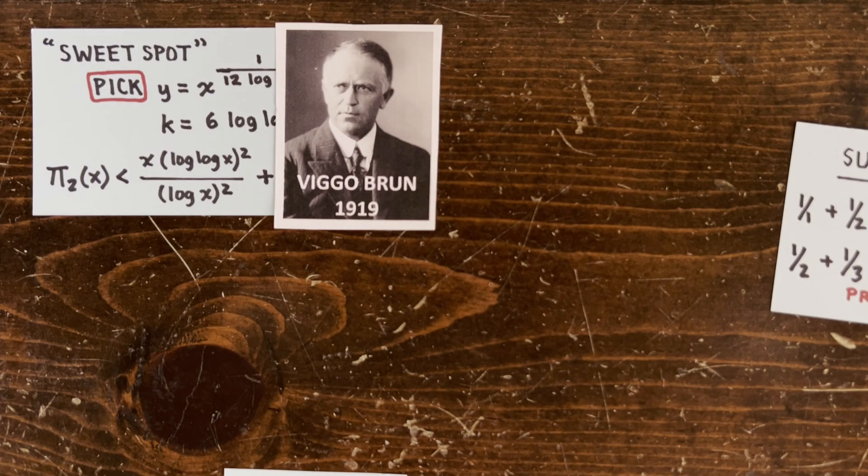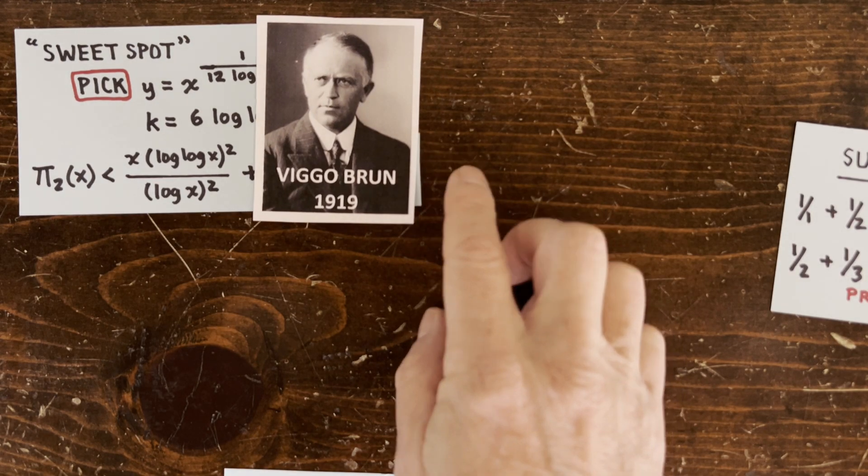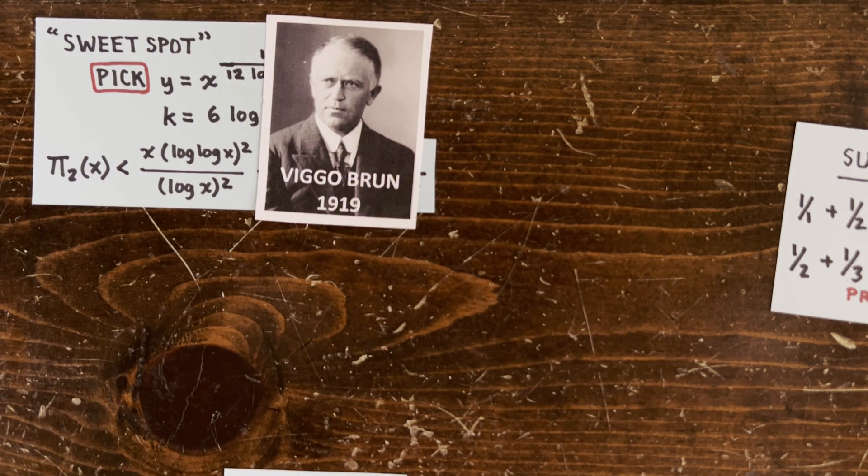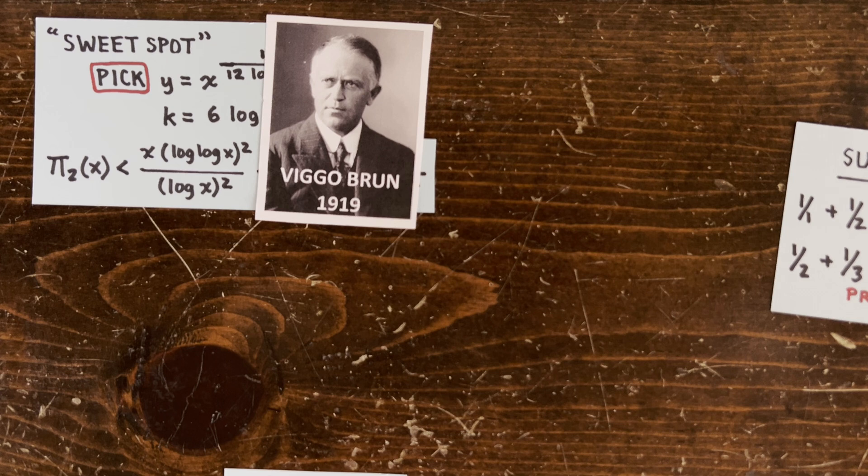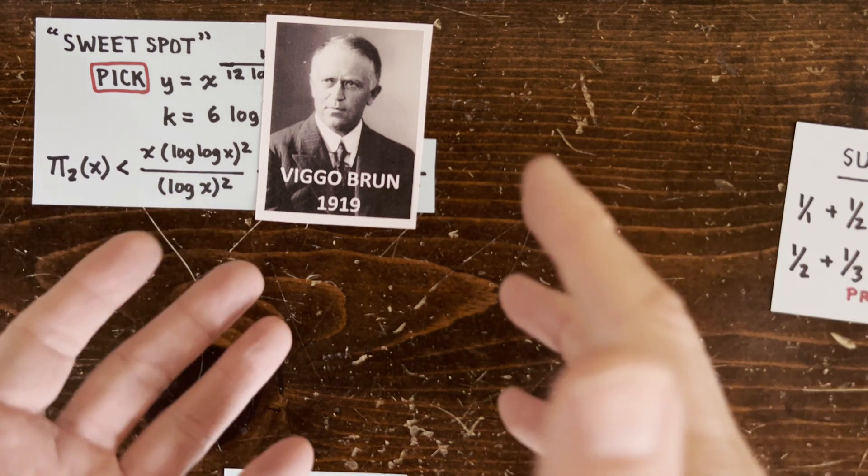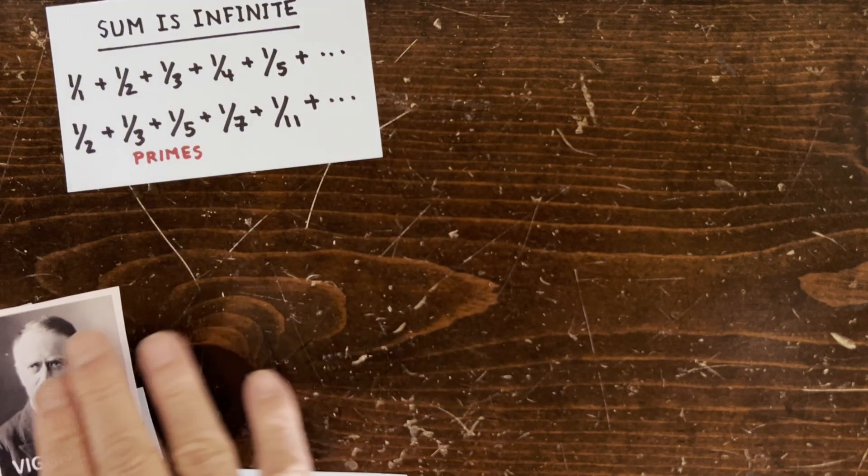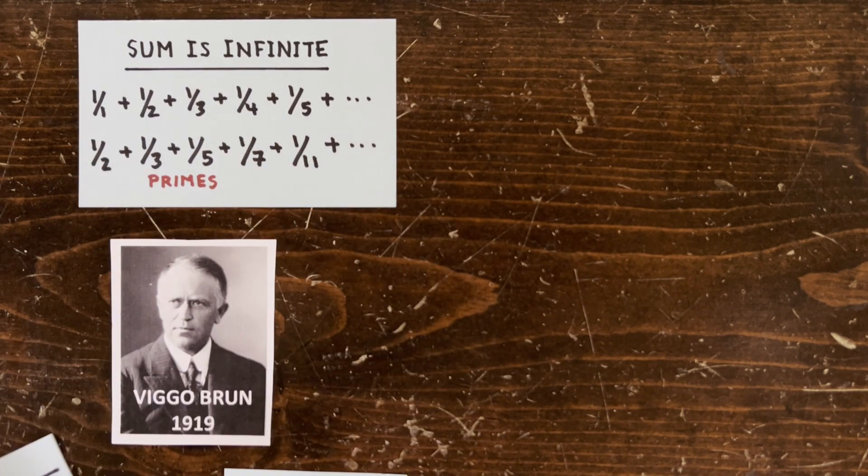Now Viggo Brun has to write up his result. Unfortunately, this is not a catchy title for a paper. Maybe he could say something like twin primes thin out faster than primes, but he's got a better idea. Remember our previous episode about reciprocals? If we take all the numbers, their reciprocals sum diverges to infinity.